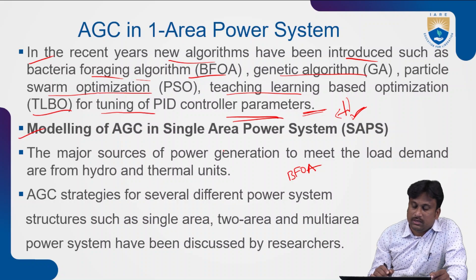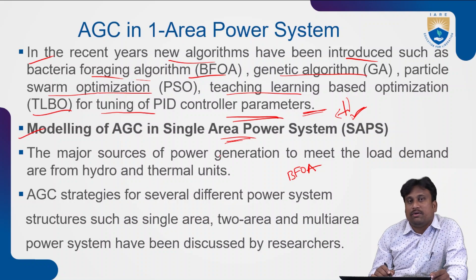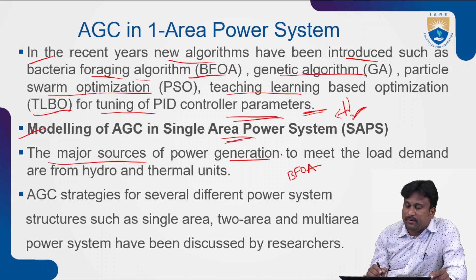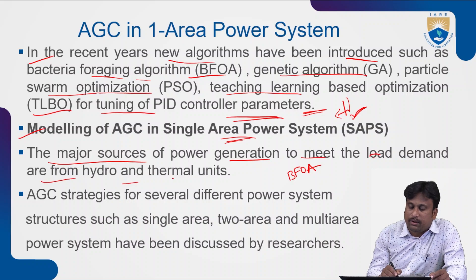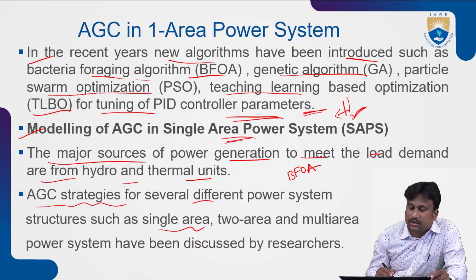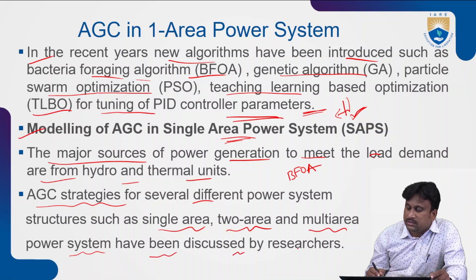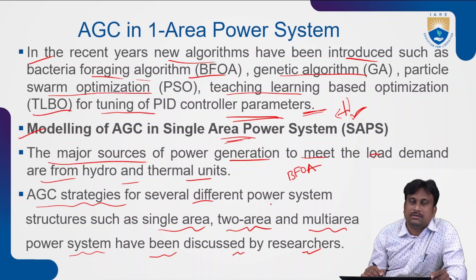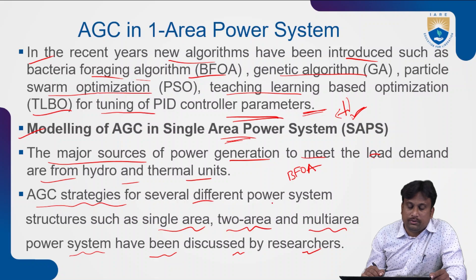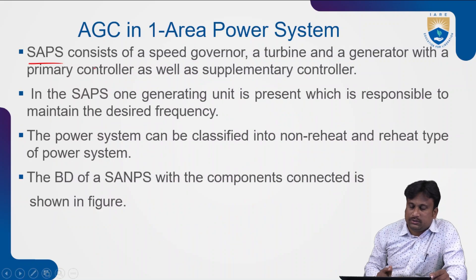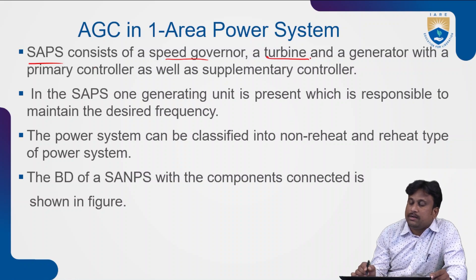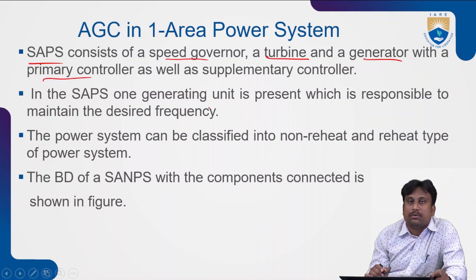For modeling of the AGC for the single area power system network, the SAPS model is assumed with certain constraints. Major sources of power generation are hydro and thermal units ready to meet load demand. AGC strategies for several different power system structures — single area, two area, multi-area — have been introduced and discussed by researchers to develop latest controller actions tied to various optimization methods to reduce harmonic effects. SAPS consists of a speed governor mechanism, turbine, and generator connected with primary and supplementary controllers.